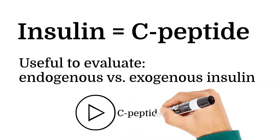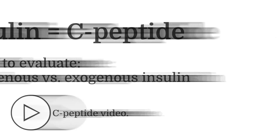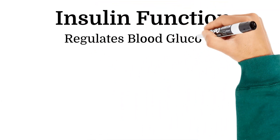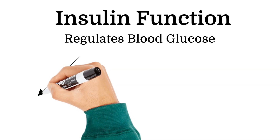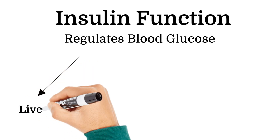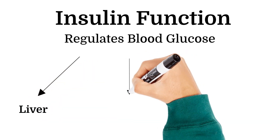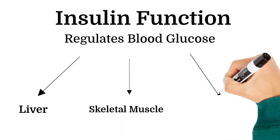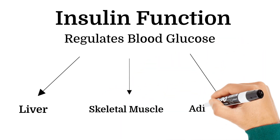The main function of insulin is to metabolize carbohydrates, specifically to regulate the concentration of glucose in the blood. This is achieved primarily by the interaction of insulin with its receptors in the liver, skeletal muscles, and adipose tissues.